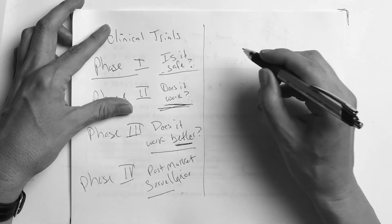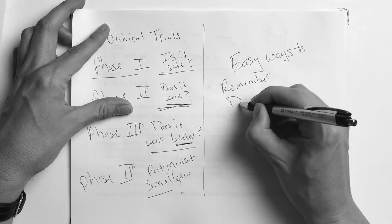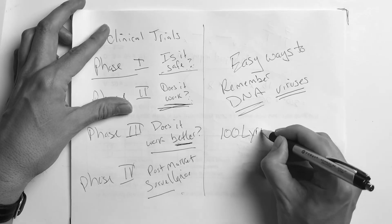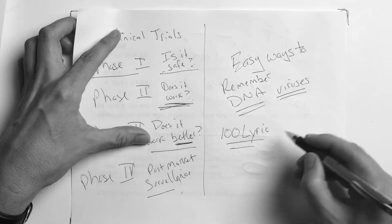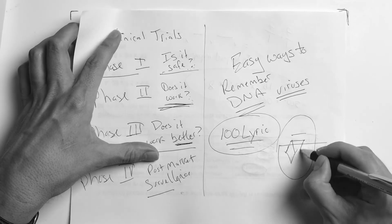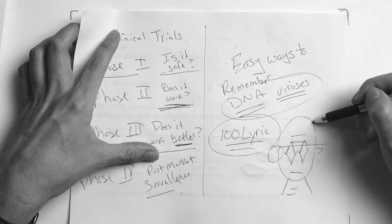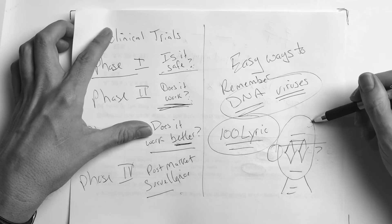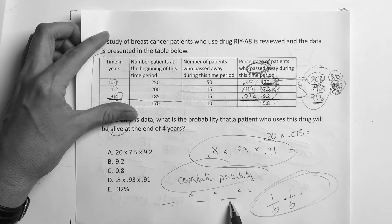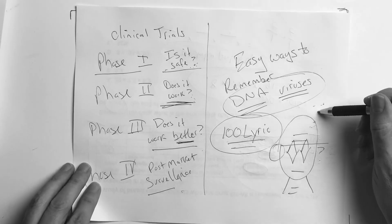Second homework item: look up a YouTube video called 'Easy Ways to Remember DNA Viruses' by a channel called '100 Lyric' — you'll see a picture called 'The Boy with the Hat.' Hopefully you're familiar with it; it's a great, simple, and effective way to memorize the DNA viruses. I don't want to take credit for their work, but we'll create some questions around it in an upcoming video. Take-home points: cumulative probability — multiply. Understand the phase trials. And check out that DNA virus video. Hope this was helpful!